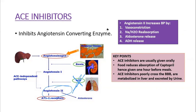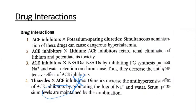Our goal is to lower the blood pressure. Some key points: ACE inhibitors are usually given orally. The absorption of captopril is reduced with food, so it is given one hour before meals. ACE inhibitors poorly cross the blood-brain barrier. They are metabolized in the liver and excreted by urine. Some drug interactions you absolutely must know: ACE inhibitors can't be used with potassium-sparing diuretics because this will cause hyperkalemia, which can be fatal. ACE inhibitors also can't be used with lithium because they reduce renal elimination of lithium, which can accumulate in the body and cause toxicity.